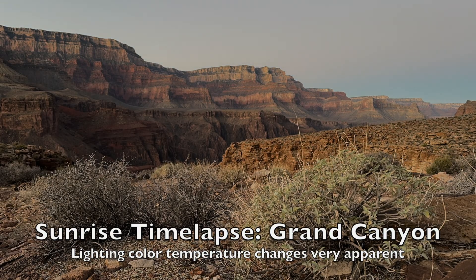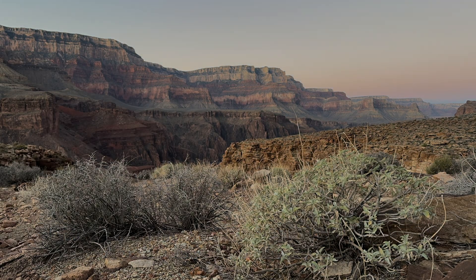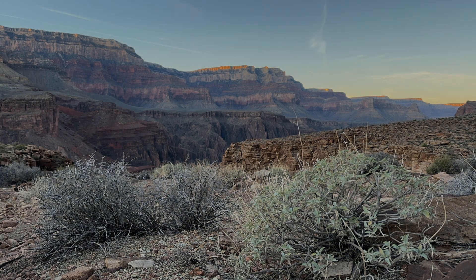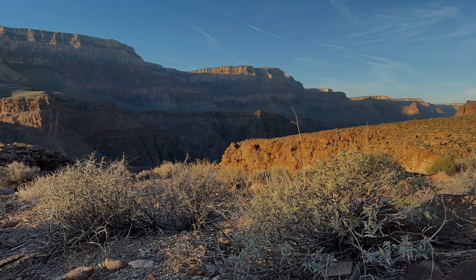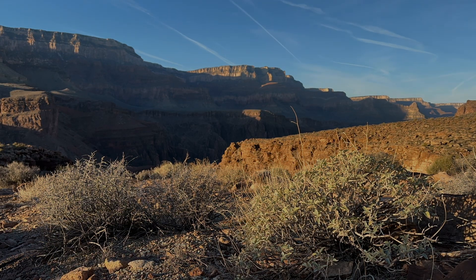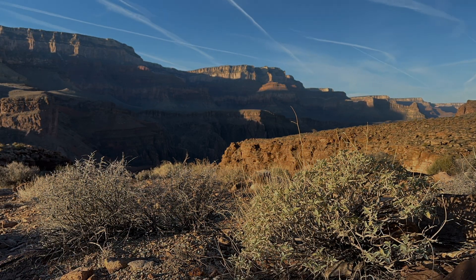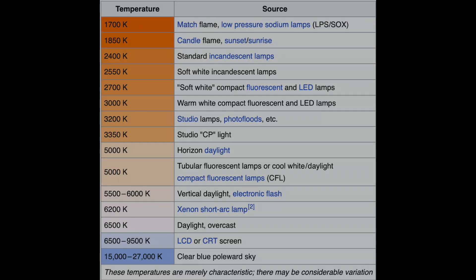We all know the lighting around us changes, which makes the world around us look different, though we may not be aware of it because often the shifts are slow and our brain adapts to the variation. But our camera may or may not adapt to what is called white balance or color temperature. You deal with the white balance every time you make a video, though you may not think about it because your camera uses auto white balance, often abbreviated as AWB.